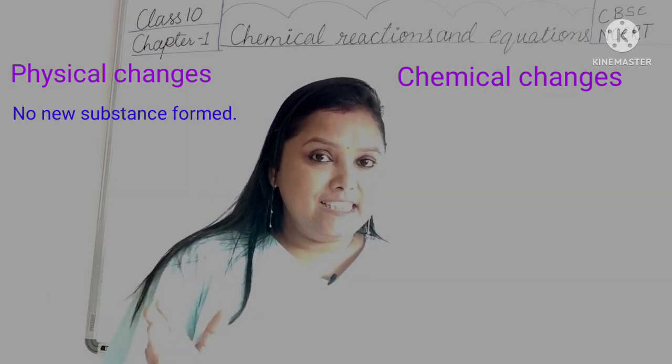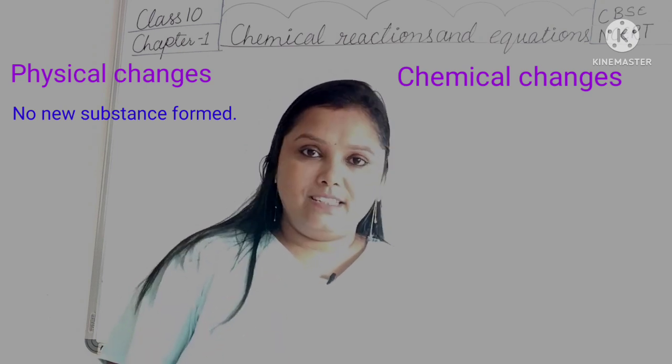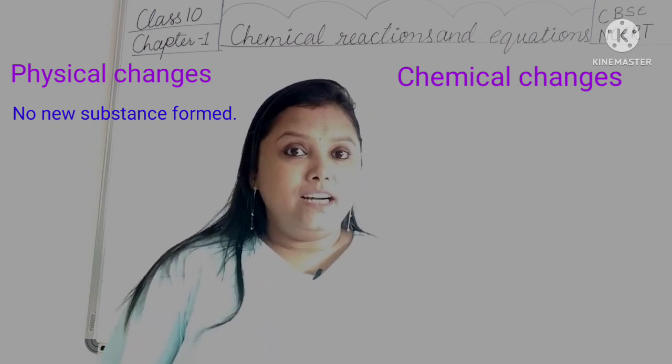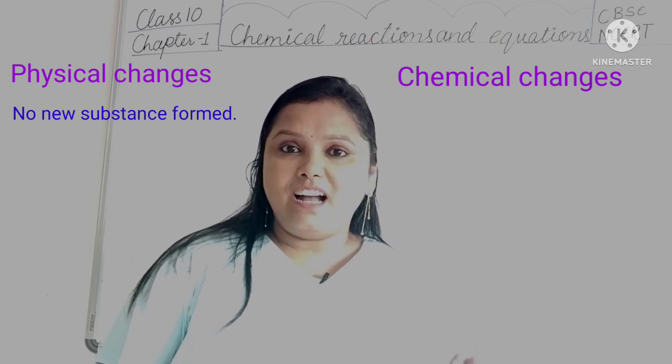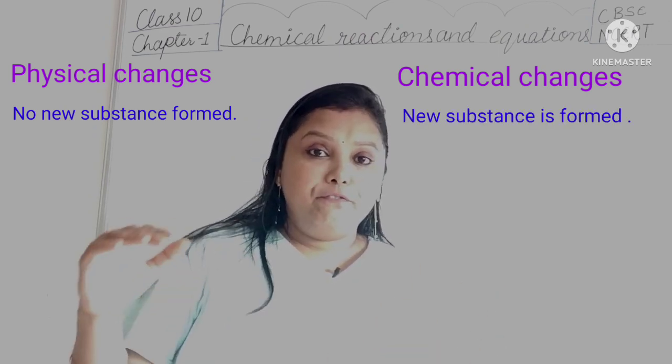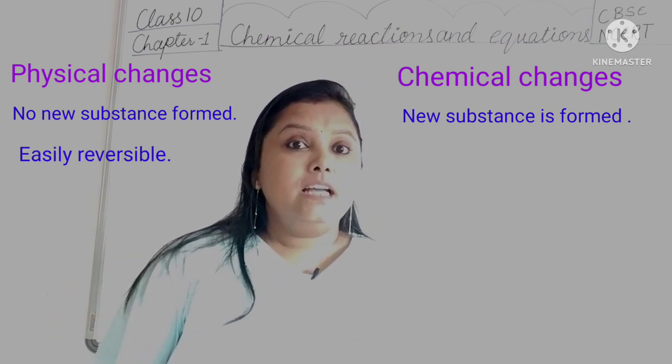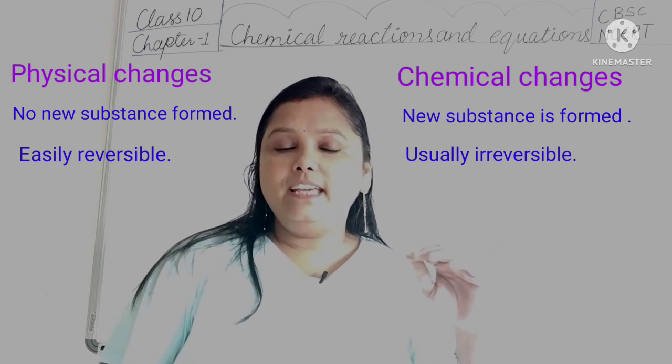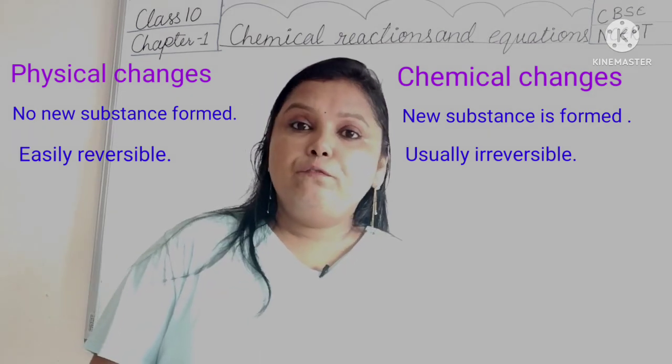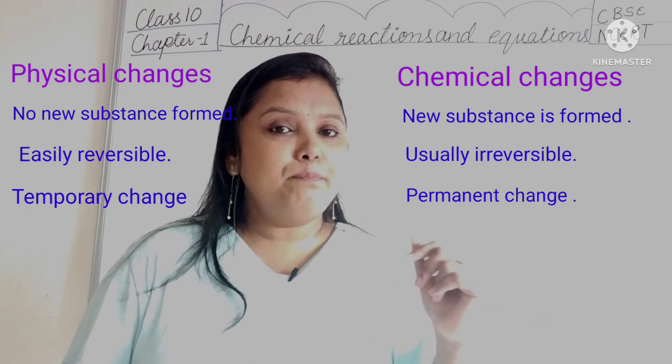In physical changes, there can be change in shape and size but no new substance is formed. On the other hand, new substances are formed in chemical changes with entirely new properties. Physical changes are easily reversible whereas chemical changes are irreversible. Physical changes are temporary whereas chemical changes are permanent.